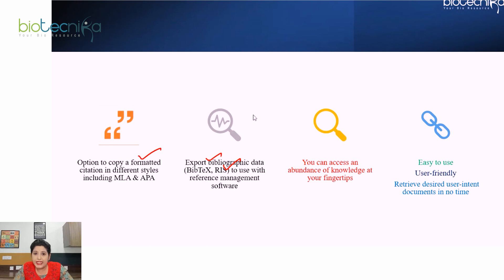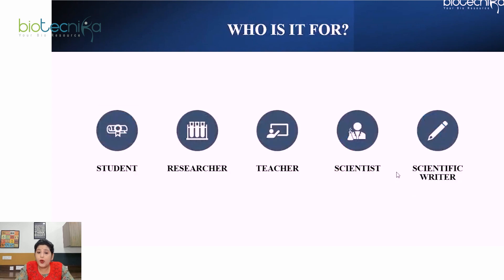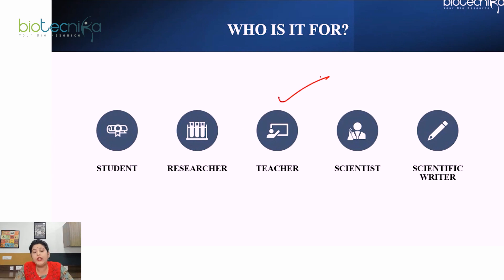Google Scholar is very easy to use, user-friendly, and you can retrieve desired documents in no time. We can say Google Scholar is the place to go to search for scholarly literature. Whether you are a student, a researcher, a teacher, a scientist, or a scientific writer, Google Scholar is definitely the place to go.